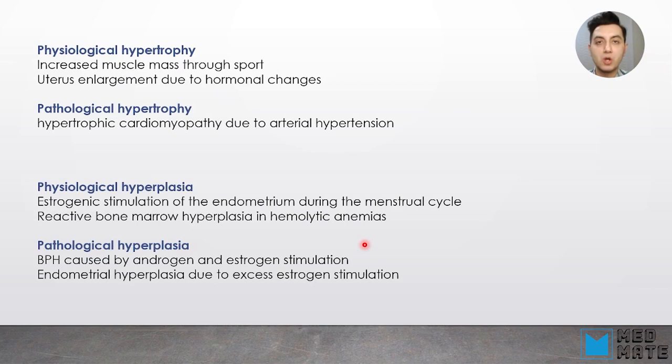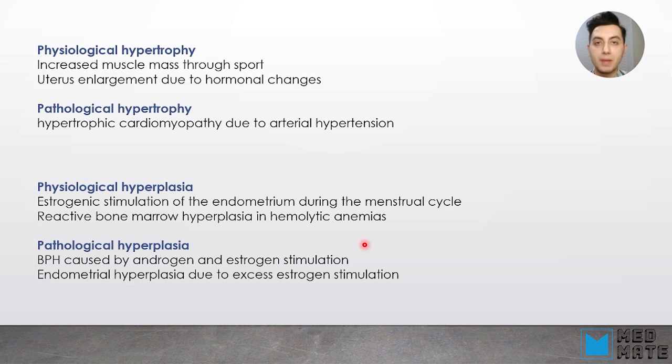When we are talking about hypertrophy, there are two types: physiological hypertrophy or pathological hypertrophy. Physiological hypertrophy is increased muscle mass size through sport — for example, people who go to the gym doing exercises, the mass of their muscle cells is increasing. Another example is uterus enlargement due to hormonal changes. Pathological hypertrophy — an example is hypertrophic cardiomyopathy, which is due to arterial hypertension.